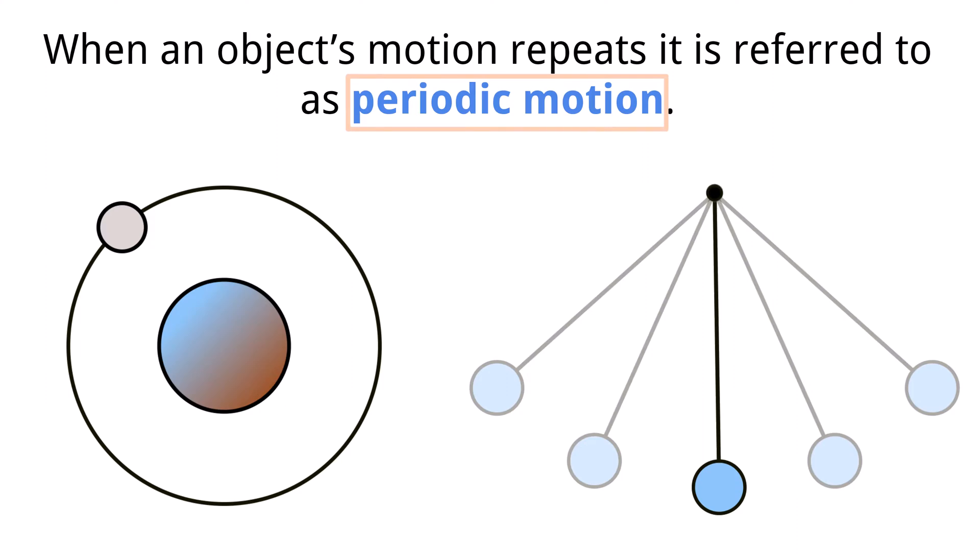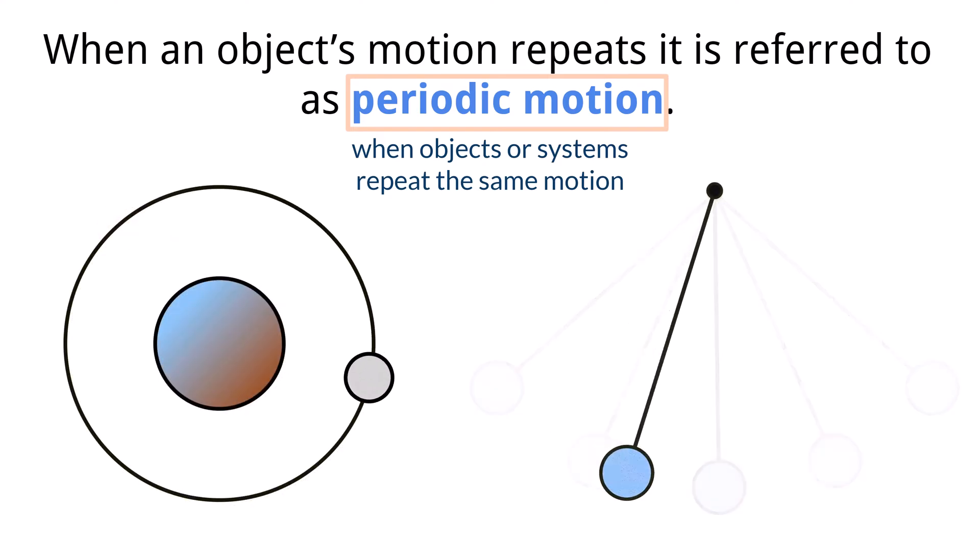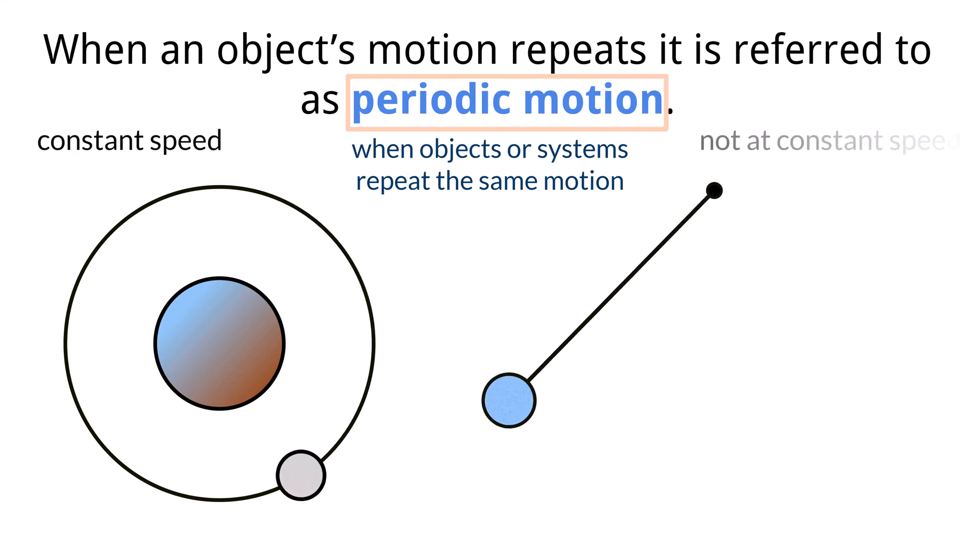Sometimes when objects and or systems move, they repeat the same motion over and over. Imagine a planet moving around a star, or a ball swinging back and forth on a string. You should be able to see the speed of the planet as it moves around the star as constant. The pendulum doesn't maintain constant speed, but you should notice that the bob moves between the same two points in the same fashion. Any kind of motion where an object's motion repeats at regular time intervals is called periodic motion.